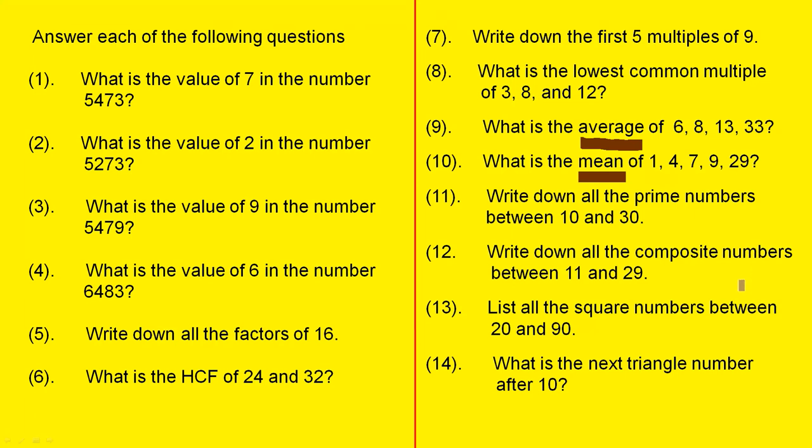List all the square numbers between 20 and 90. We explained what we meant by square numbers. And what is the next triangle number after 10?